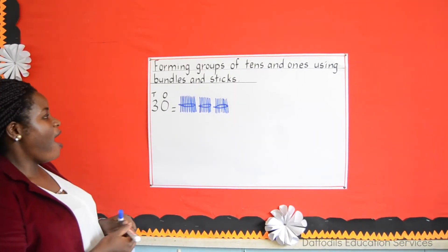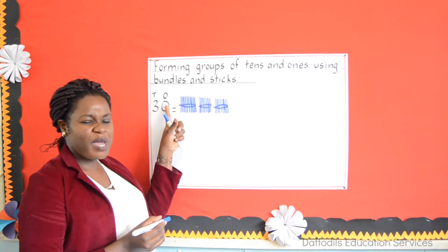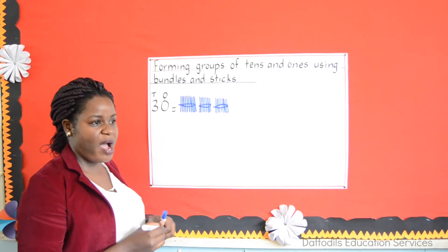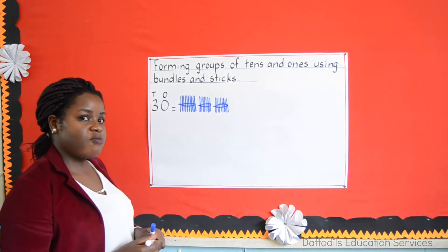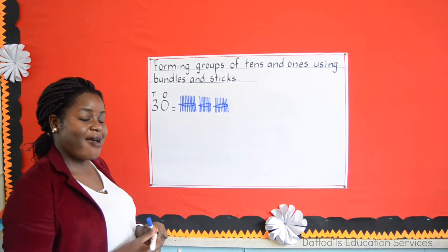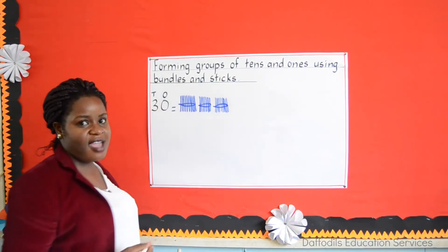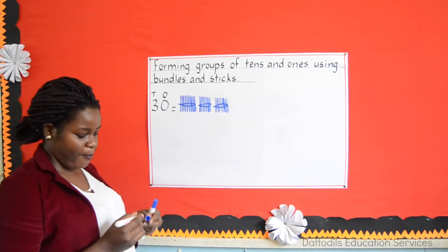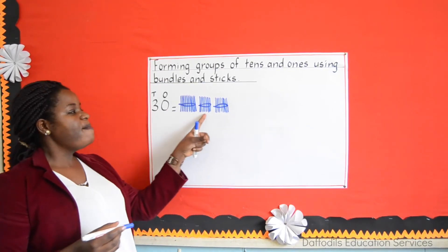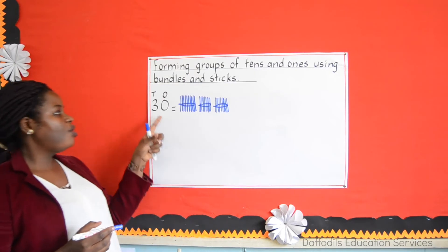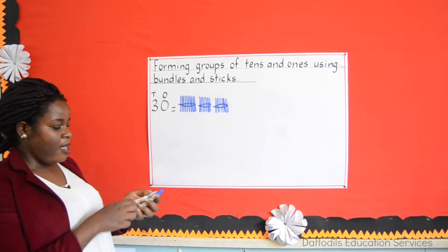Now I'm going to look at how many 1s I need to draw. I told you with 1s we draw the sticks. But if I have nothing here, I'll leave them. So when you see 3 bundles of 10, that equals 30.